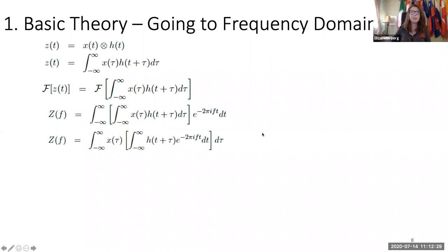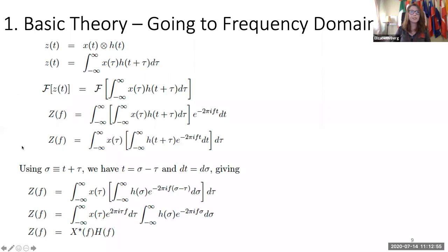I want to jump into the basic theory of going to the frequency domain, just a quick review. I believe Professor Hermann Creato covered this for convolution last week. We can go into the frequency domain via the Fourier transform to go from z of t to z of f, where f is frequency. If we substitute sigma equal to t plus tau, we get this form here, and we can move some terms around. And then we get our final result here for the frequency domain representation.